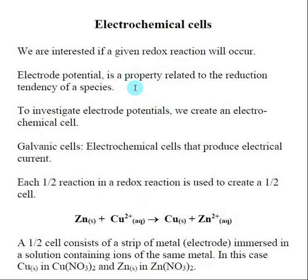This leads us to a discussion on electrode potential, which is a property related to the reduction tendency of the species. Even though we have both reduction and oxidation reactions, when we list these in a table we always talk about a species' ability in terms of its reduction. When you look up potentials for a given reaction, they're always shown as a reduction. By definition, electrode potential is related to the reduction tendency of the species involved, and it's up to us to determine if we're dealing with an oxidation — in which case we need to flip the reaction.